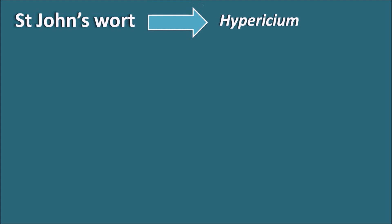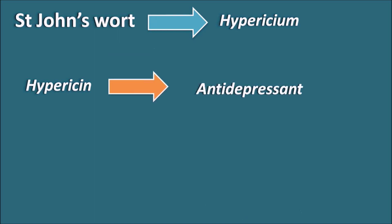St. John's Wort comes from Hypericum species, and one of its important chemical constituents is hypericin. Hypericin acts as an antidepressant, and St. John's Wort is an herbal preparation used for depression. It works similarly to SSRIs (selective serotonin reuptake inhibitors), but should not be combined with other antidepressants due to drug interactions. It can be used as an herbal preparation for depression when other antidepressants have not proved useful.